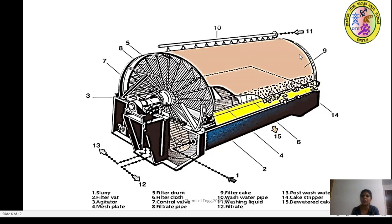Component seven is the control valve, followed by the filtrate pipe. After filtration you have a filter cake deposited onto the drum. There is a wash water pipe where the washing liquid is being sent, and the filtrate after washing is collected at the bottom. As the drum rotates, component 13 is the wash water port, and 14 is the cake stripper used to strip the cake. Component 15 is for de-watering, where air is used for partial drying of the cake.